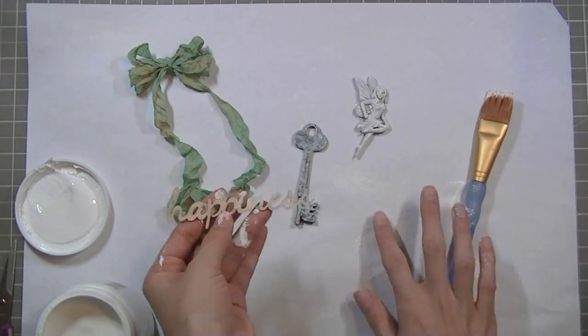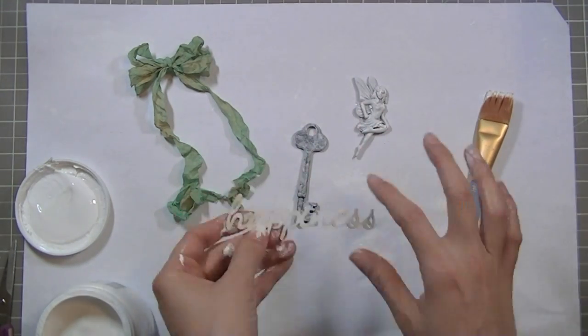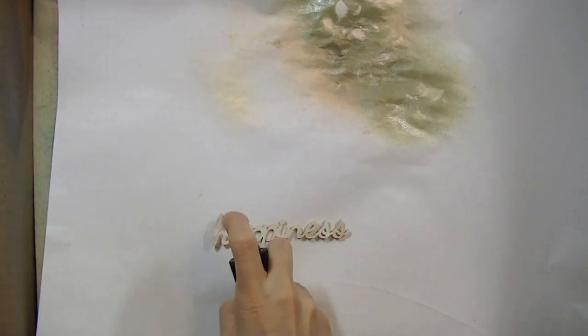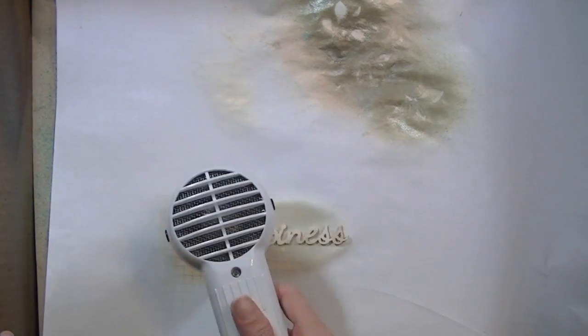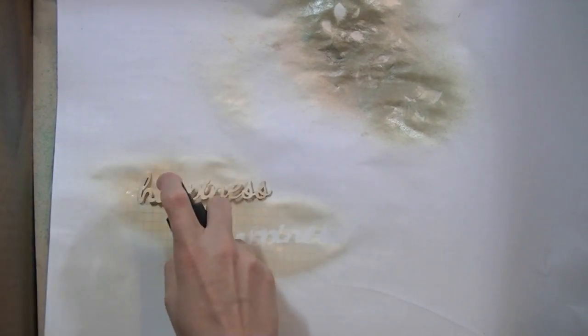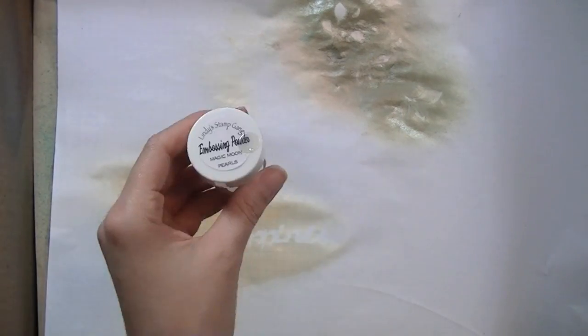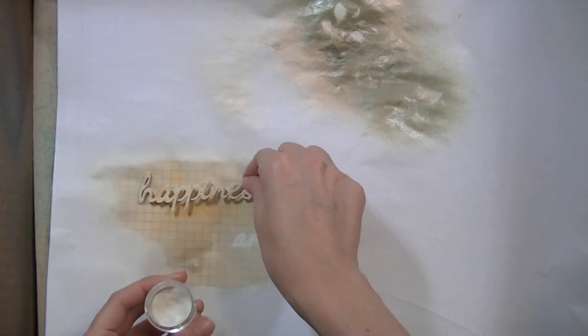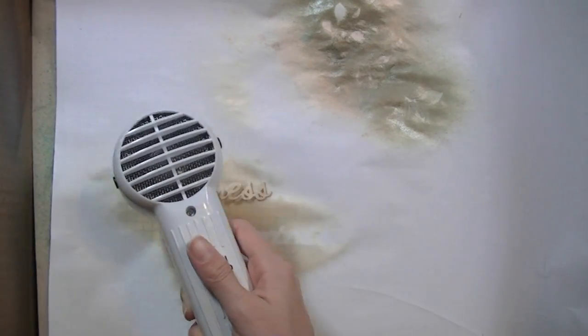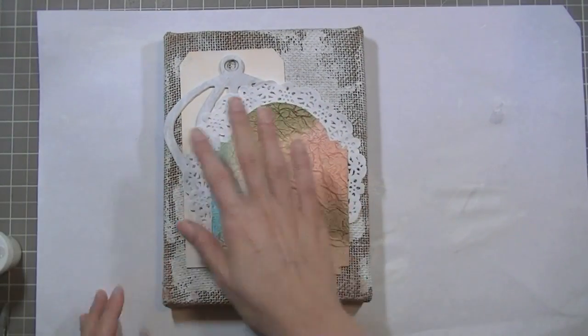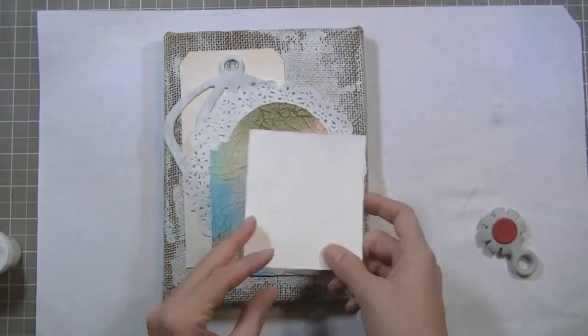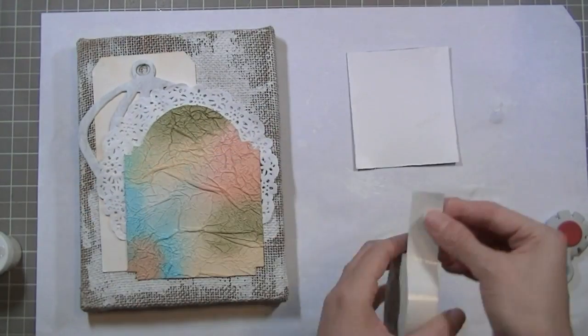I'm also using a Shabby Chic Treasures resin piece from Prima and another wood veneer from Prima, the word happiness. And I'm just covering very little with my finger using the gesso just to even things out. And then I'm going to add a little bit of bubbly Lindy Stamp Gang just to add a little bit of color. It's a very pale color so I add several layers of it just to add a hint of yellow or orangey yellow. And then I'm going to add my Magic Moon Pearls embossing powder by Lindy Stamp Gang.